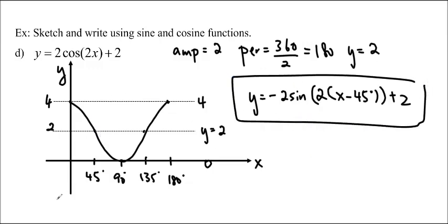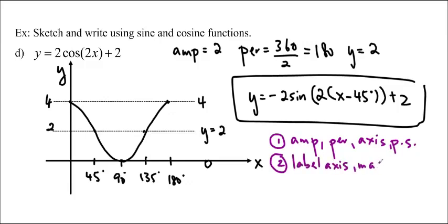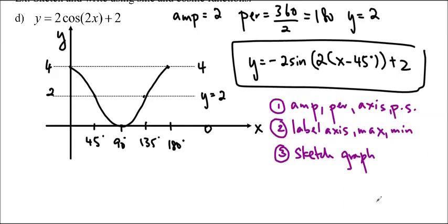So do lots of practice. The procedure that I used was number one, I found the amplitude, I found the period, I found the axis, and I found the phase shift. Number two, I just label the axis, the max, and the min values. Number three, sketch the graph using a start with wherever you're supposed to go. So if you're starting with cos, then you're going to start at the max, and then if you're negative cos, start at the min. Sign, positive sign, middle, and move up. Negative sign, middle, and move downwards. So you sketch that graph.